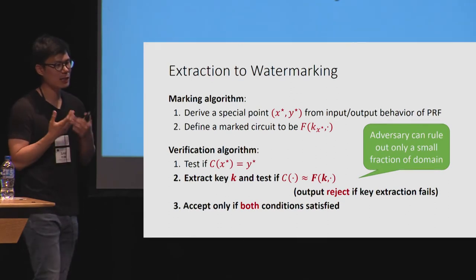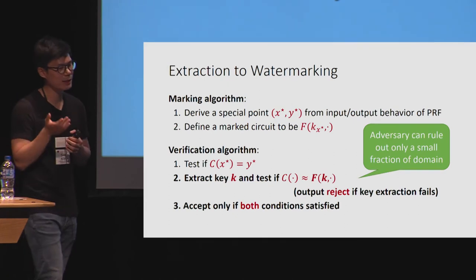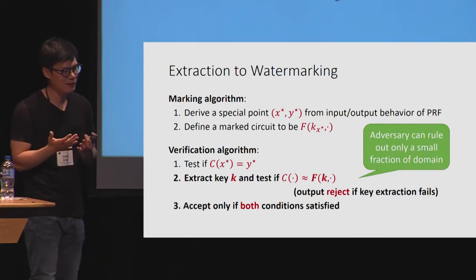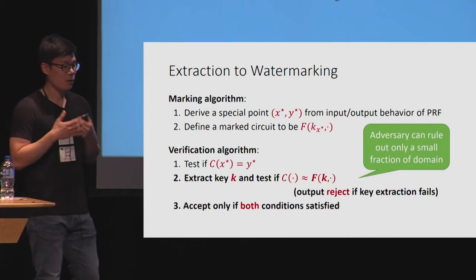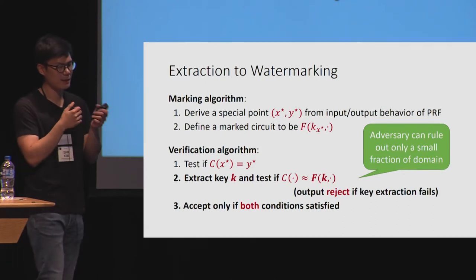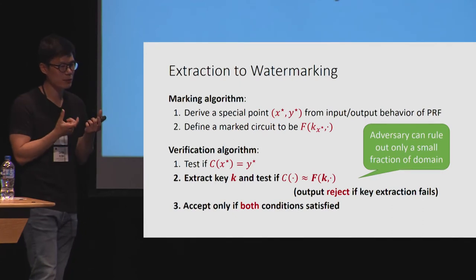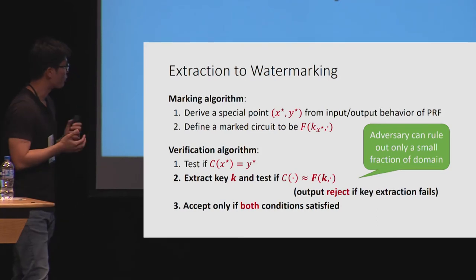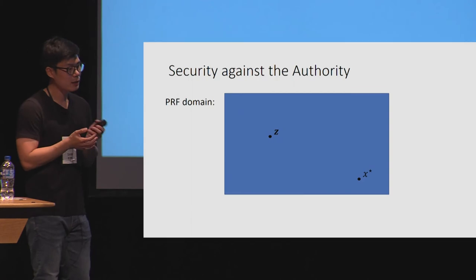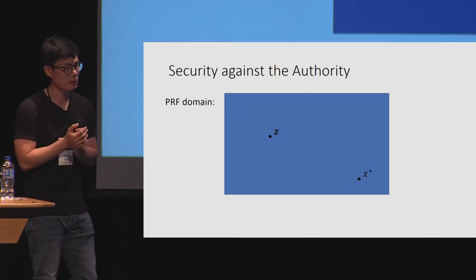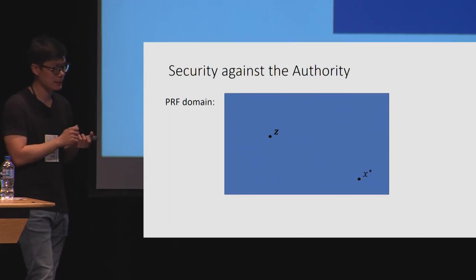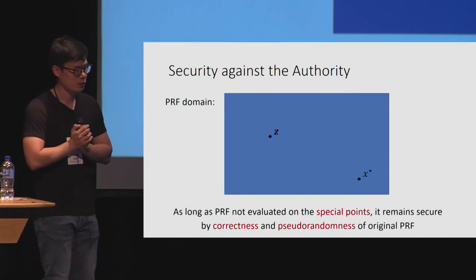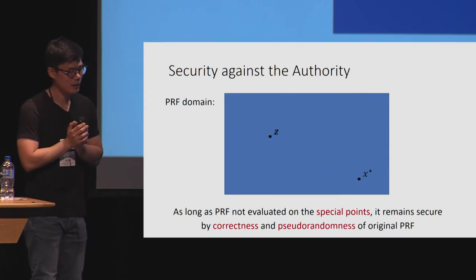The verification algorithm accepts the circuit as marked only if both conditions are satisfied. Now the adversary cannot run the binary search attack, because if the adversary modifies the outputs on half of the inputs, either the key extraction will fail — in which case the verification algorithm outputs zero — or the key extraction will succeed and we can detect whether the circuit differs from the original PRF on a sufficiently large fraction of inputs. This is basically how we achieve unremovability in the presence of the verification oracle. For security against the authority: in an extractable PRF, there are only two special points in the domain — X star and Z — and by the pseudorandomness of the original puncturable PRF, as long as the PRF is not evaluated on these two special points, it is pseudorandom.